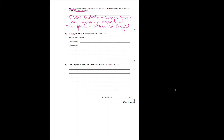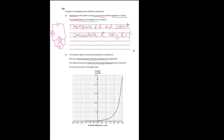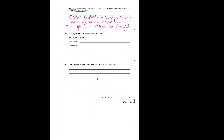What is the electrical component in the sealed box? Looking at the graph, in the negative direction the resistance is extremely high — even when the potential difference increases in the negative direction, the current remains at zero. In the positive direction, the resistance decreases very quickly, which is why the current increases so much. So the component is a diode. The explanation is: very high resistance in the negative direction, and resistance decreases quickly in the positive direction.